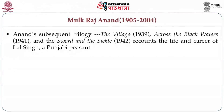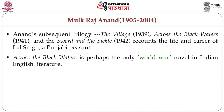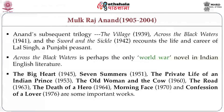Anand's subsequent trilogy — The Village, published in 1939; Across the Black Waters, published in 1941; and The Sword and the Sickle, published in 1942 — recounts the life and career of Lal Singh, a Punjabi peasant. Across the Black Waters is perhaps the only World War novel in Indian English literature. The Big Heart, published in 1945; Seven Summers, published in 1951; The Private Life of an Indian Prince, published in 1953; The Old Woman and the Cow, published in 1960; The Road, published in 1963; The Death of a Hero, published in 1964; Morning Face, published in 1970; and Confessions of a Lover, published in 1976, are some important works.